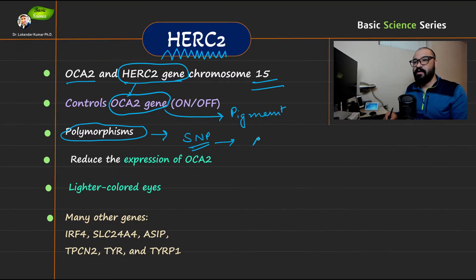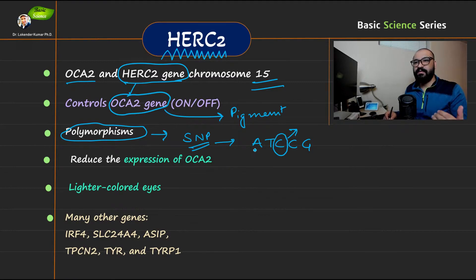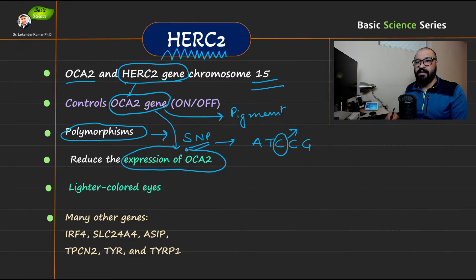Single nucleotide polymorphism occurs when, in a DNA sequence, one specific position is occupied by different nucleotides in different individuals. Because of that, you will have different forms of this gene — that is known as single nucleotide polymorphism. This particular variation in the HERC2 gene is going to reduce the expression of the OCA2 gene.